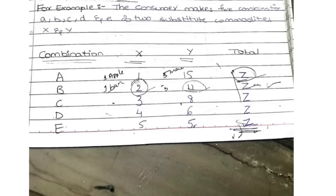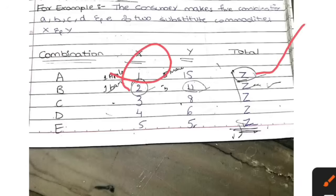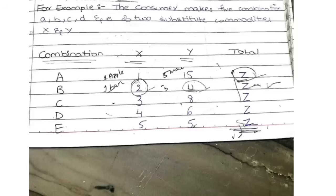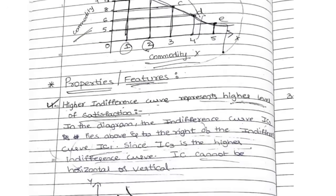For example, there are combinations A, B, C, D, E. X is apple and Y is banana. If person A consumes one apple he gets 100 units of satisfaction; if he eats 15 bananas he also gets 100 units — so one apple equals 15 bananas for person A. For person B, two apples give the same satisfaction as a certain number of bananas. This substitution of commodities to get the same level of satisfaction is called indifference curve analysis, and it is plotted on a diagram as shown.